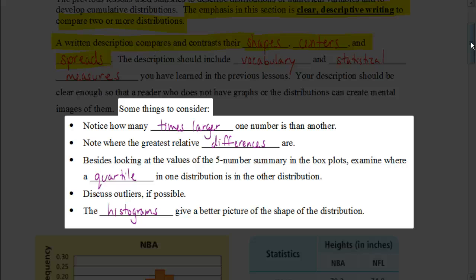These are just some suggestions to help you out. You might want to notice how many times larger one number is than another. You might want to figure out and note where the greatest relative differences are. It's easy to look at the five-number summary and compare individual numbers, but I would encourage you to look at the box plots and examine where the different quartile is in one distribution might compare to the quartile in another distribution. If there's a possibility of having any outliers, you want to discuss the outliers if that's necessary. Histograms are going to give a better picture of the shape of the overall distribution.